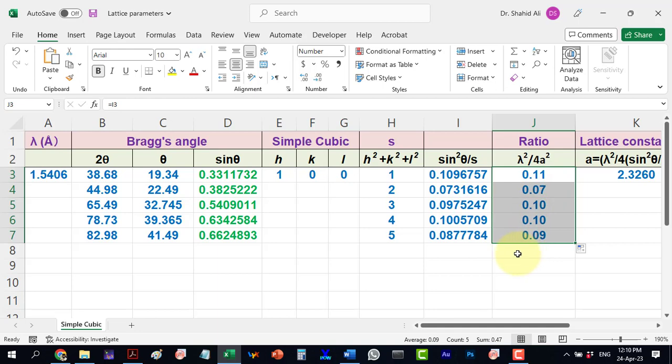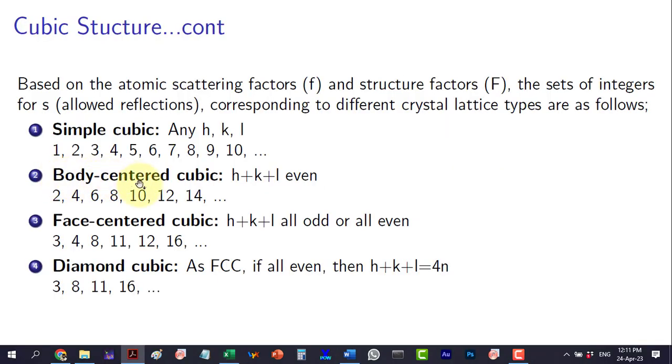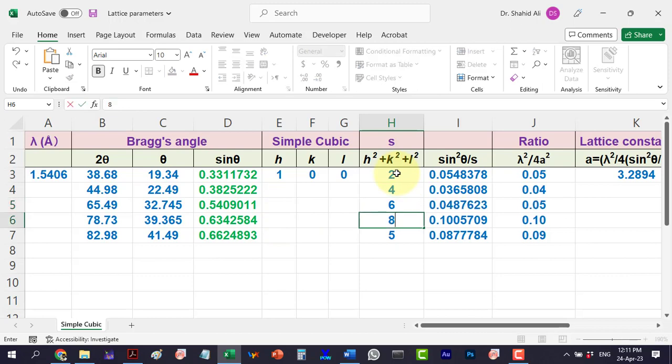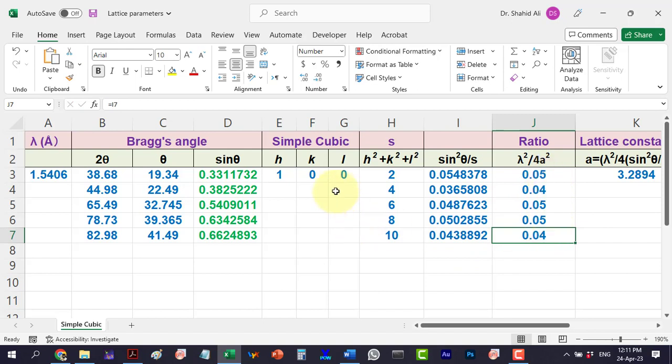Now we try with another set of integers that is the BCC structure. And now here we see that the ratio is constant, hence we conclude that the structure is a BCC structure.